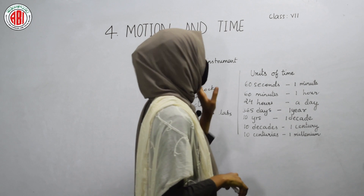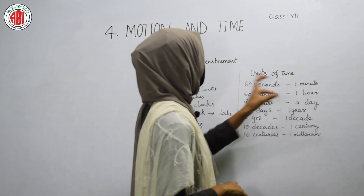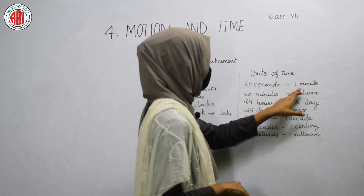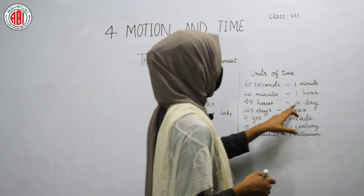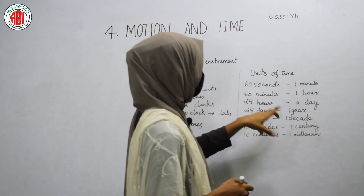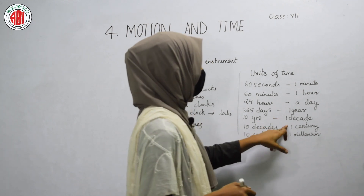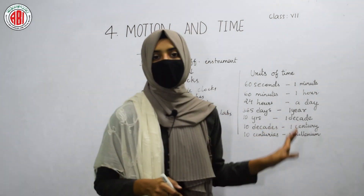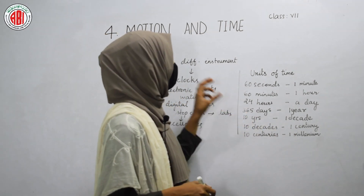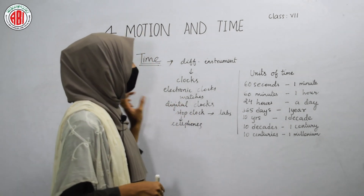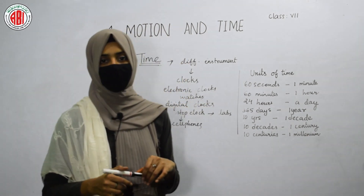The units of time are: 60 seconds equals one minute, 60 minutes equals one hour, 24 hours makes a day, 365 days comprises one year, and 10 years equals one decade. 10 decades equals one century, and 10 centuries equals one millennium. By knowing these units of time, we can easily calculate the time taken by different objects that show different motion.